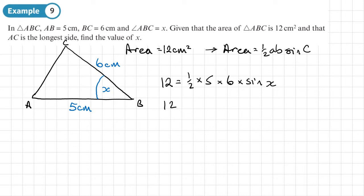Working out half times 5 times 6, that's half of 30, which is 15. So you've got 15 sine X. We'll divide both sides by 15. So we'll get sine X equals 12 over 15. And then X is going to equal the sine inverse of 12 over 15. So work that out.